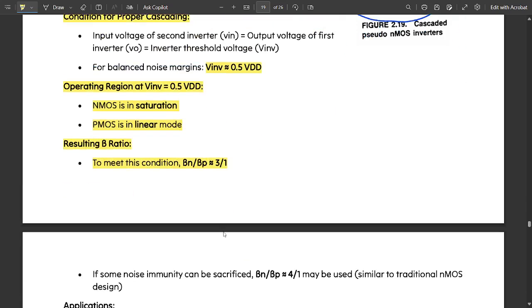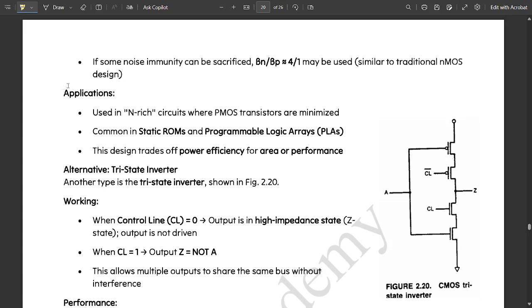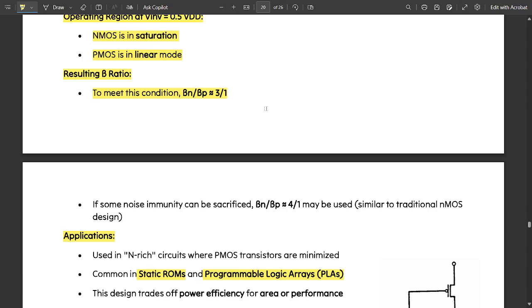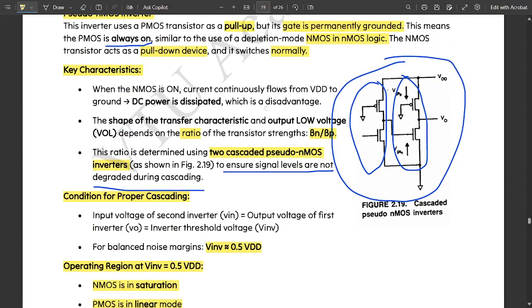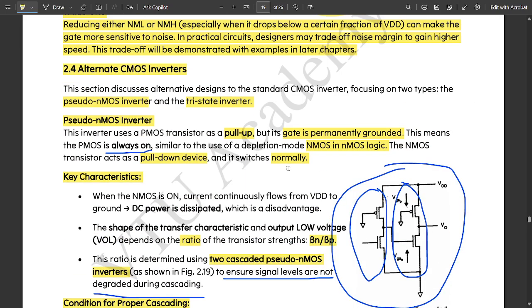Applications: used in n-rich circuits where PMOS transistors are minimized, common in static read-only memories ROMs and programmable logic arrays PLAs. This design trades off power efficiency for area or performance. This was in brief about pseudo-nMOS inverter with this cascaded diagram also discussed.